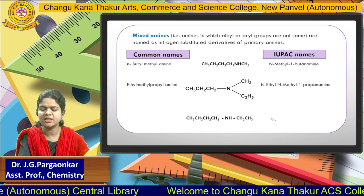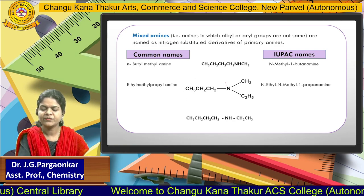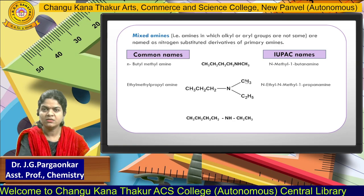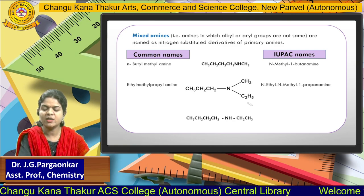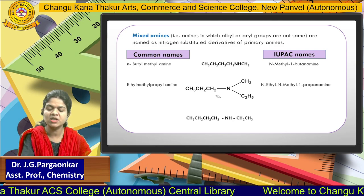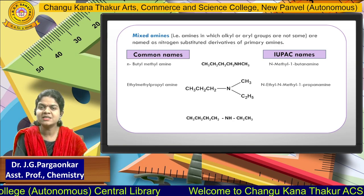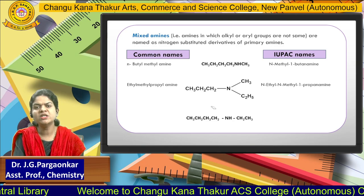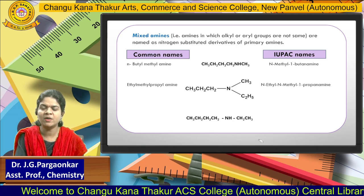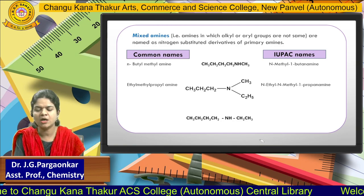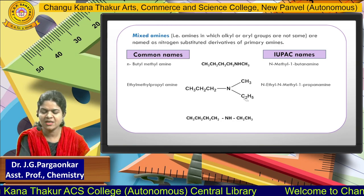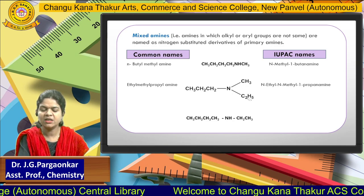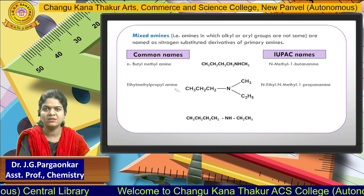In the second structure, at nitrogen, one side has a methyl group, the second hydrogen is replaced by an ethyl group, and the third hydrogen atom is replaced by a propyl group. So three alkyl substituents are there: methyl, ethyl, and propyl. Our rule is to arrange in alphabetical order ending with the word amine. So ethyl comes first, then methyl, then propyl — giving us ethyl methyl propyl amine.